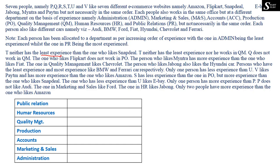Clue 1: T neither has the least experience nor less experience than the one who likes Snapdeal. This means T has more experience than the person who likes Snapdeal. So T has to be placed above Snapdeal in the experience order.